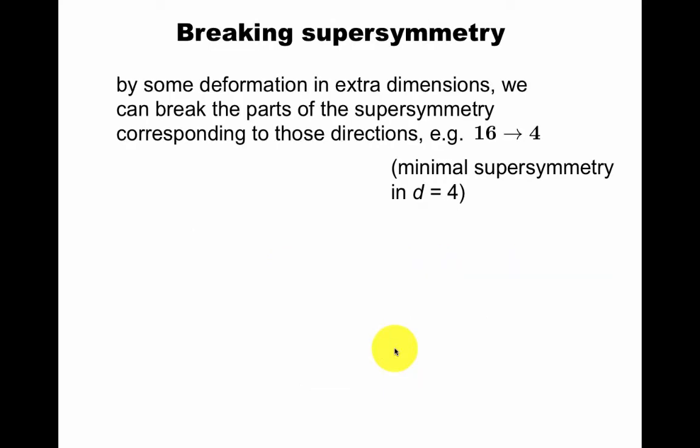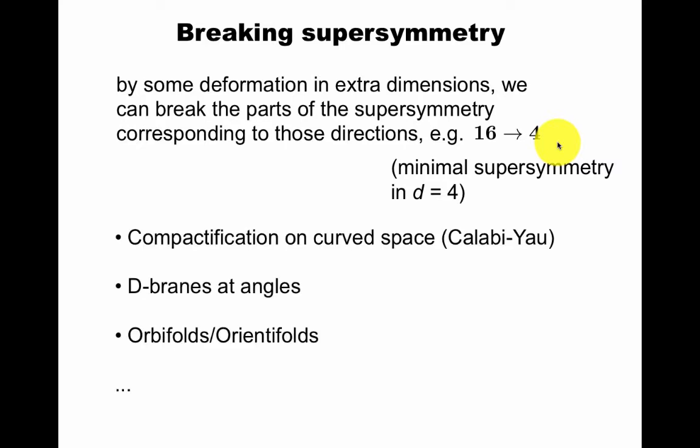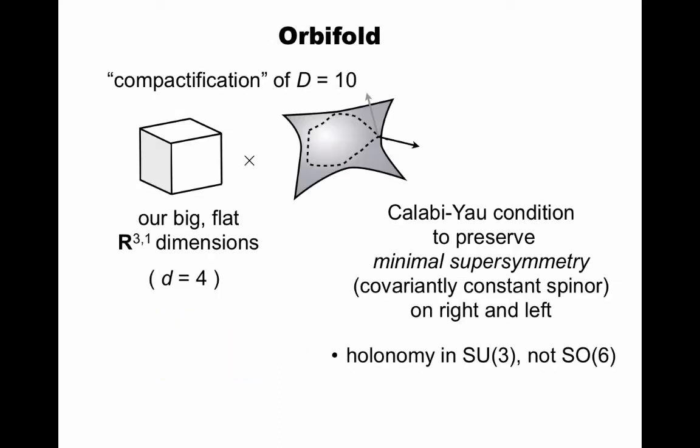By some deformation in extra dimensions we can break these 16 down to, for example, 4, which would be the minimal supersymmetry in 4 dimensions. This theory might be a richer theory then, so let's briefly go through how we get to something that more closely resembles usual particle physics. We can either compactify in some curved space, we can consider D-branes, or orbifolds or orientifolds. Let's pick an orbifold. Compactification from 10 dimensions to 4 dimensions, you impose a condition to preserve minimal supersymmetry, as discussed in another video. This condition corresponds to the holonomy, the group that you get from parallel transporting a vector around the extra dimensions, and the condition is that it should be an SU(3), not the generic situation which is SO(6).